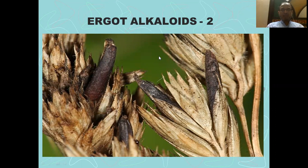Bismillahirrahmanirrahim. As-salamu alaykum. We begin with our second lecture on the topic of ergot alkaloids. Last time we covered the introduction to ergot alkaloids and their classification. We also discussed their mechanism of action, including their actions on the different receptors and the actions on different tissues, including the uterine smooth muscle, the GIT, and the actions on CNS.